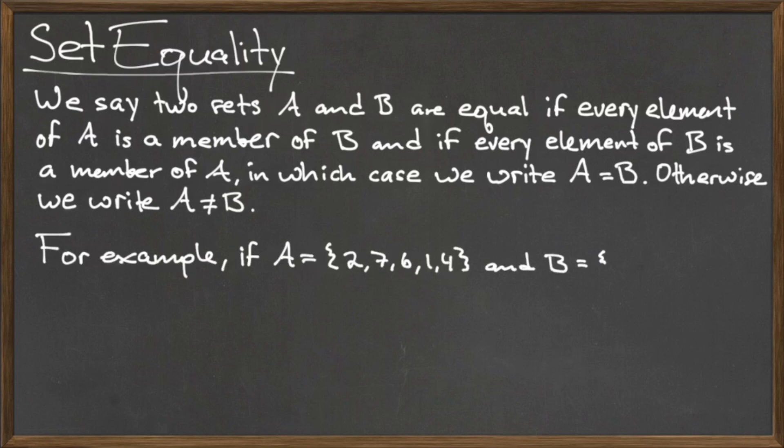For example, consider the following two sets A and B. To determine if these two sets are equal, we need to make sure that every element in A is also in B, and vice versa. The set A contains the elements 2, 7, 6, 1, and 4, and the set B contains the elements 1, 2, 4, 6, and 7. When listing the elements of a set, the order in which we do so does not matter. All of the elements in A are also elements of B, and all of the elements of B are also elements of A. So, the sets A and B are equal.